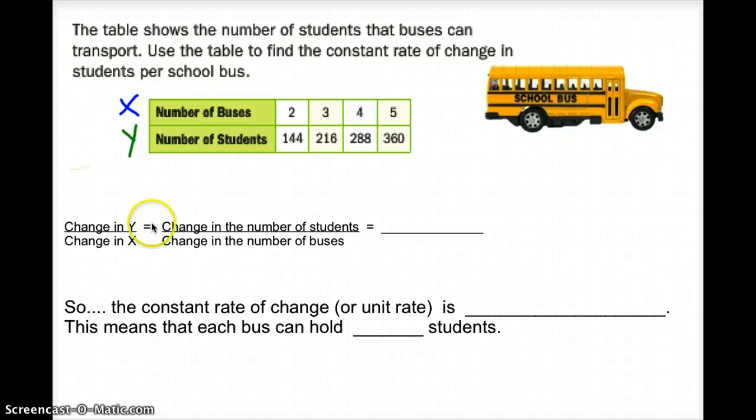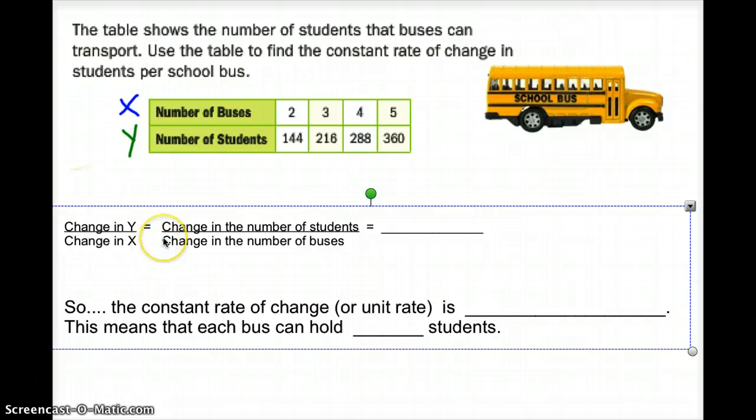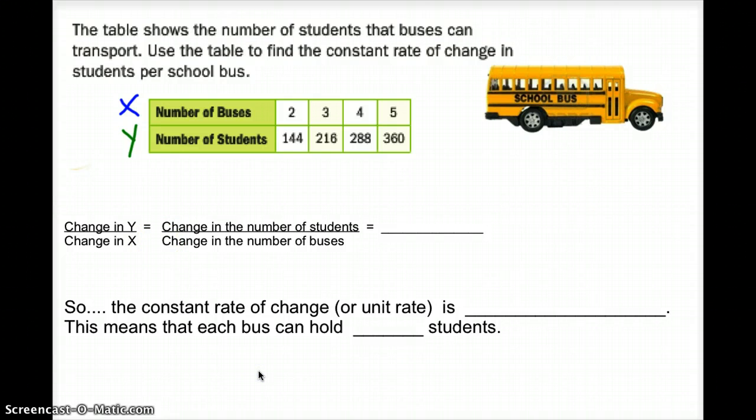We're going to find the change in the number of students and the change in the number of buses. So, in order to do that, we're going to use these arrows. We want to see the change in x, and we want to see the change in y. That means, how does it increase? So, if we looked at x, we notice it goes from 2 to 3 to 4 to 5. We know that x increases by 1.